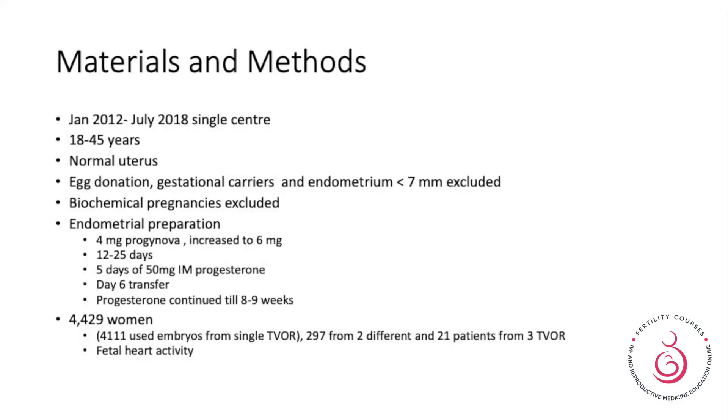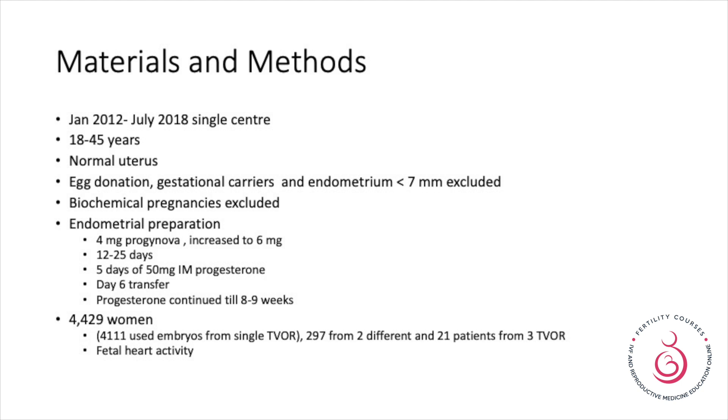From January 2012 to July 2018, this single-center trial included women aged 18 to 45 with a normal uterus. Egg donation, gestational carriers, endometrium less than seven millimeters, and biochemical pregnancies were excluded. Endometrial preparation was done with four milligrams of progesterone, increased to six milligrams over 12 to 25 days, five days of 50 milligrams of IM progesterone, transfer on day six, and progesterone continued for eight to nine weeks. This was a huge study: 4,429 women, with 4,101 using embryos from a single egg collection, 297 from two collections, and 21 patients requiring three collections.